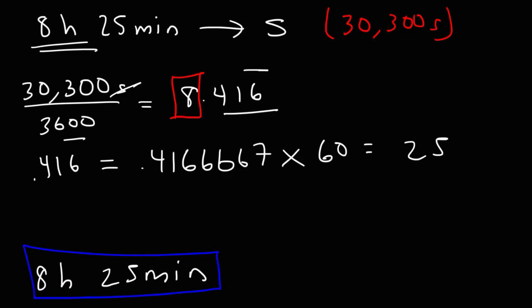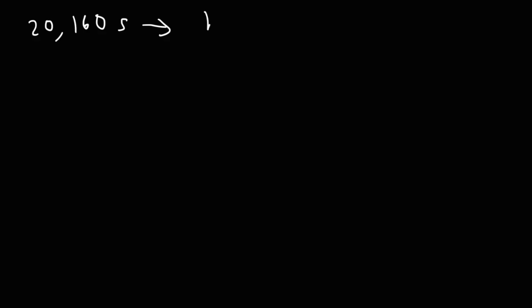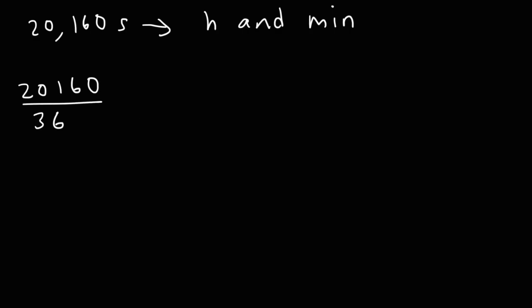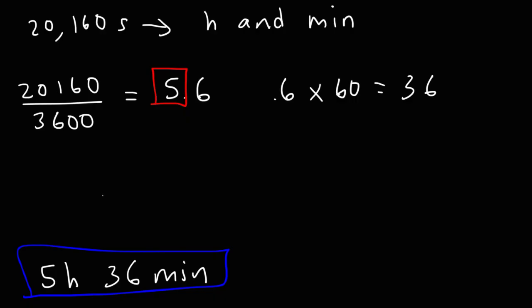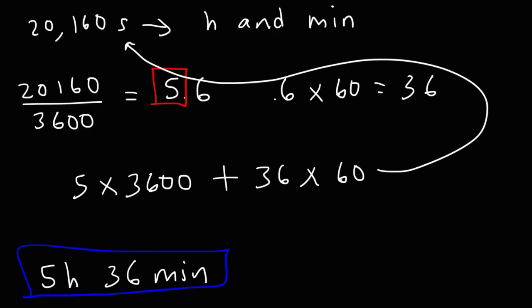That's how you go backwards from seconds to hours and minutes. Here's another one: convert 20,160 seconds into hours and minutes. Divide by 3,600 and you get 5.6. The 5 tells us we have 5 hours. Multiply the 0.6 by 60: 0.6 times 60 is 36. So the answer is 5 hours and 36 minutes. To confirm: 5 times 3,600 plus 36 times 60 should give you 20,160.